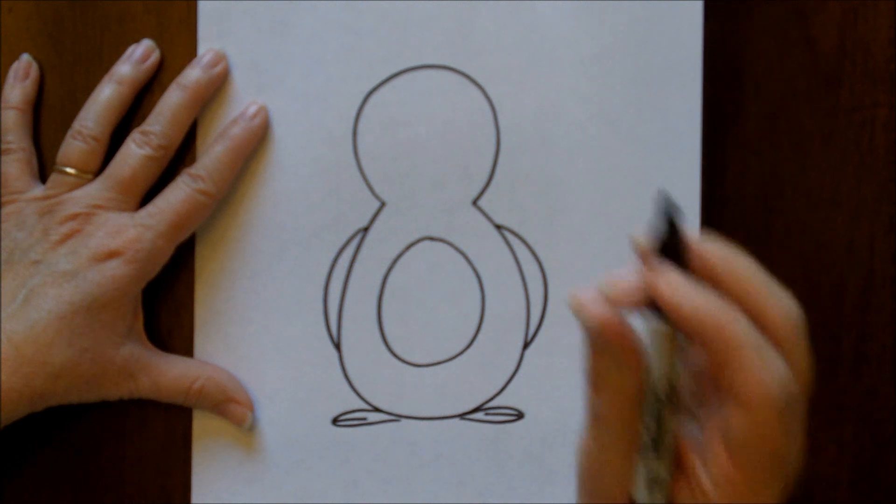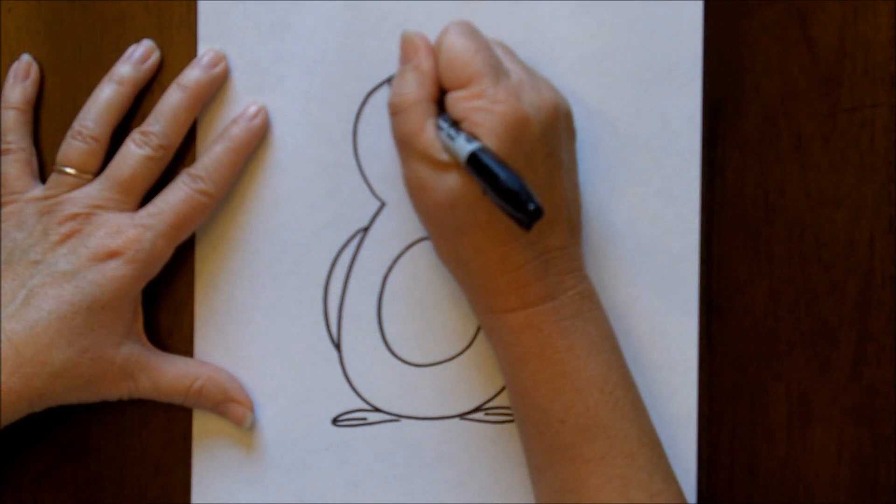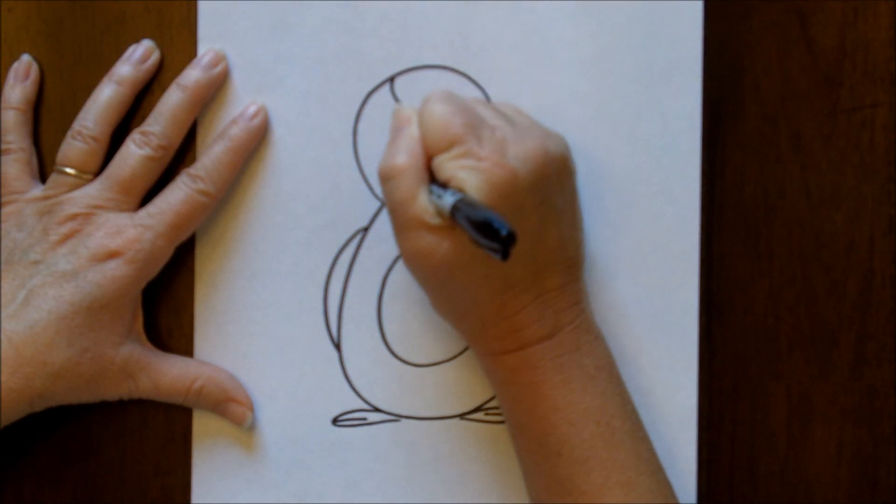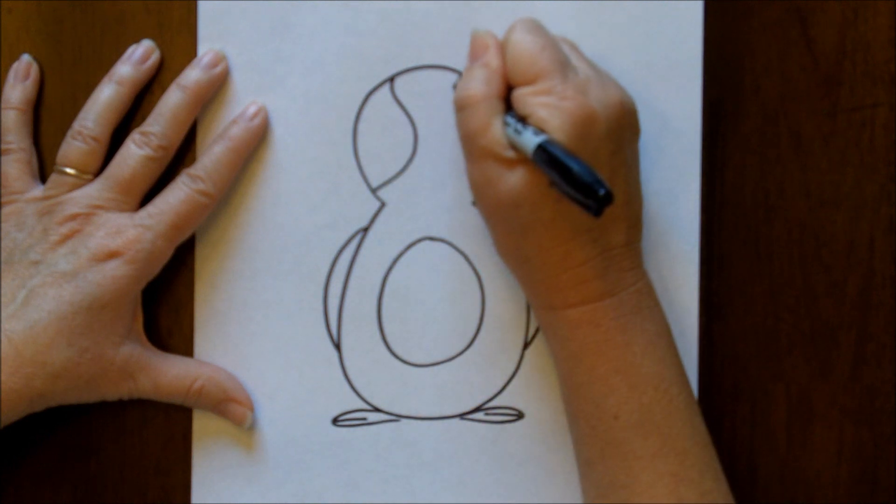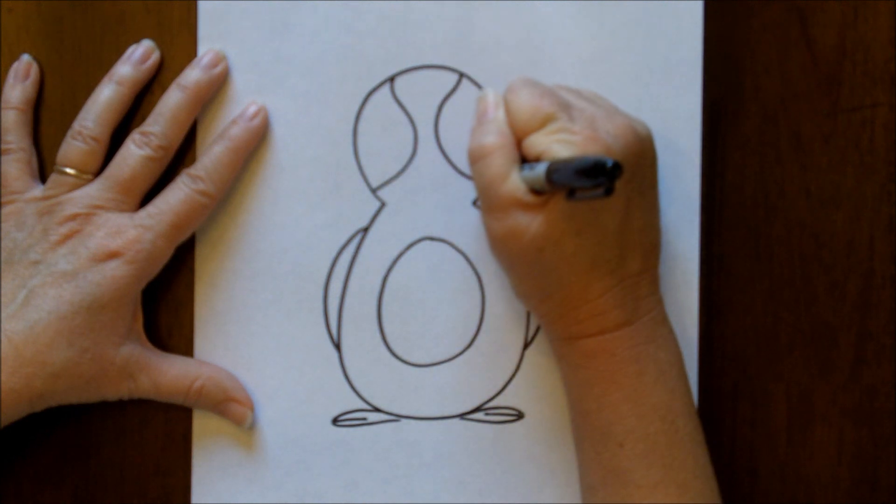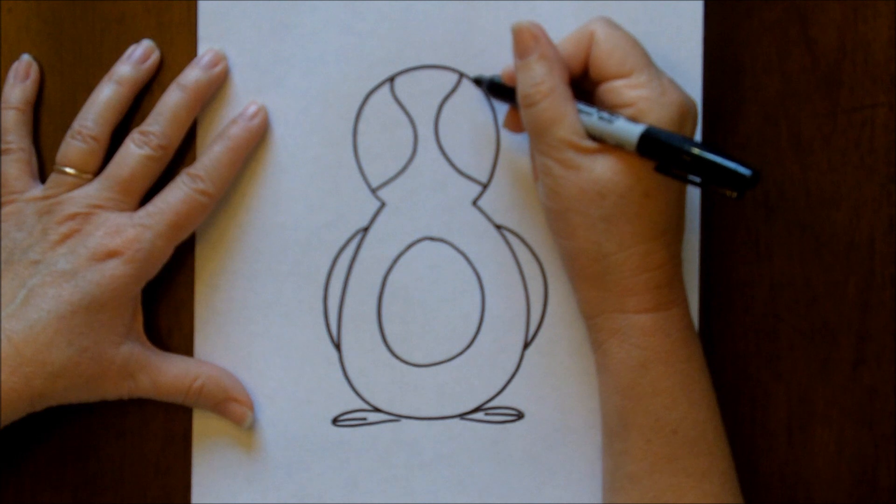And then we are going to go back up to his head. Now we are going to make a shape. It's a curvy line. It takes some practice, but with practice you can get it.